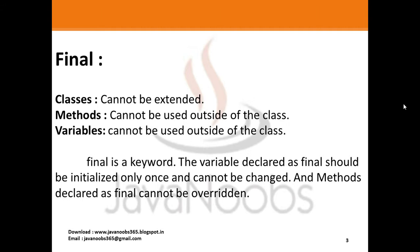Firstly, talking about final — final is an access modifier. I have talked about this modifier in the previous video tutorial, so please see it. If you use the word final with a class, a method, or a variable: final classes cannot be extended, final methods cannot be overridden, and final variables should be initialized only once and cannot be changed.